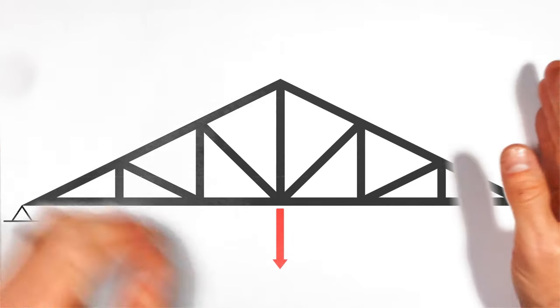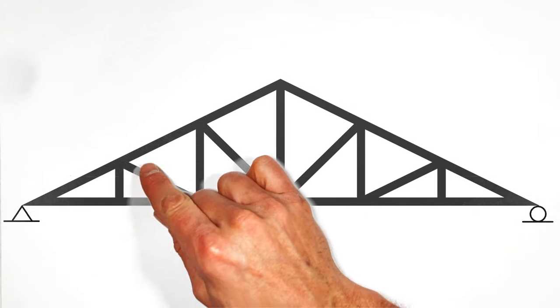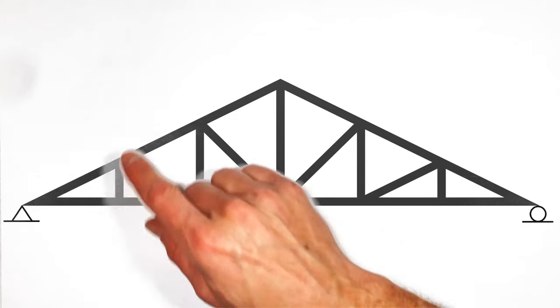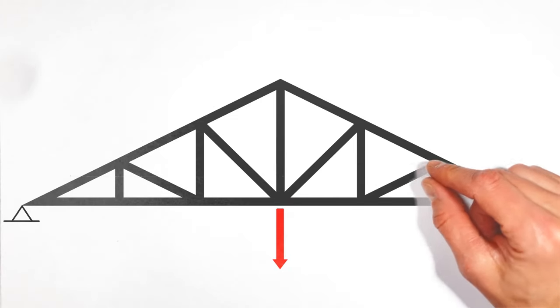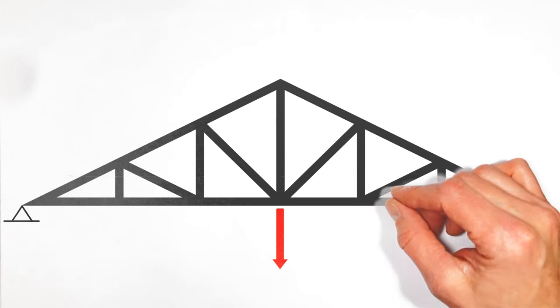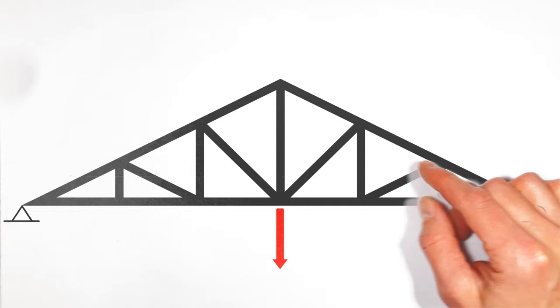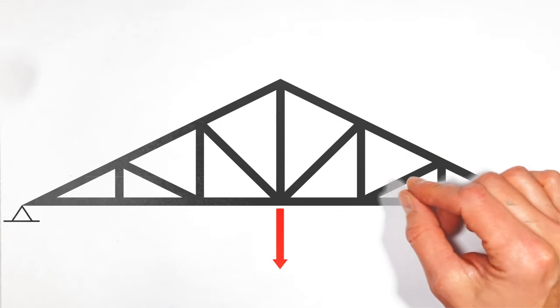All right, let's take a look at a truss so I can walk you through how to identify zero force members. Now, at first, this looks like a big truss. I mean, there's 21 members here. But as you may have guessed from the title of the video, some of these members don't have any force in them, which means this truss isn't actually that hard to analyze.